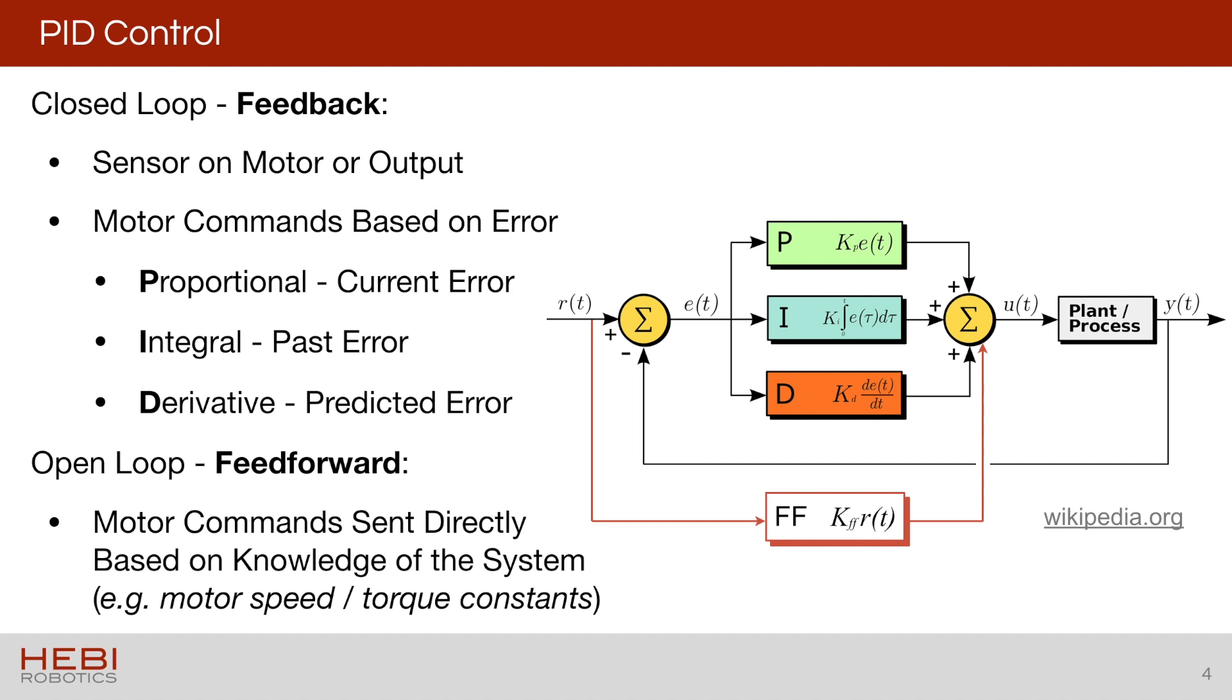When you're trying to tune a loop, one way I think about it is your feedback part of the loop is reacting to surprises, right? Error. And so if you can do things ahead of time to reduce how much your feedback loop has to react to, that's generally a good thing.